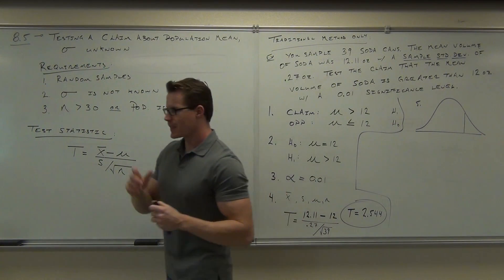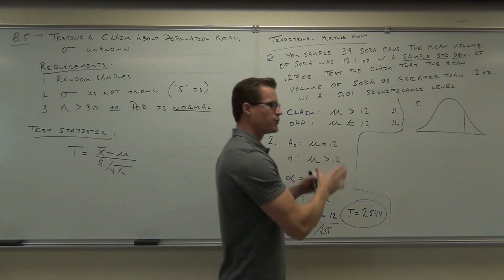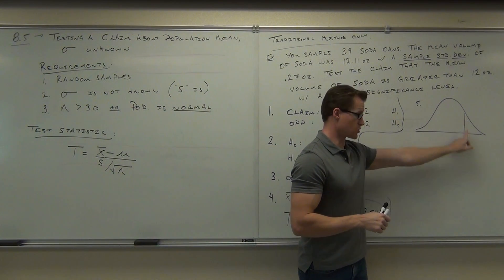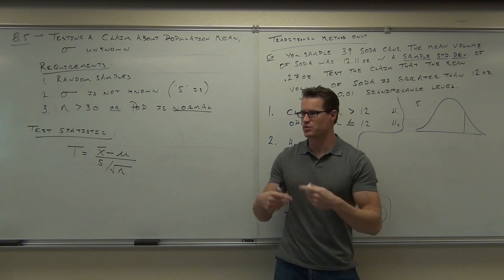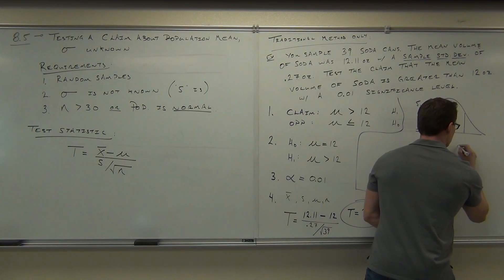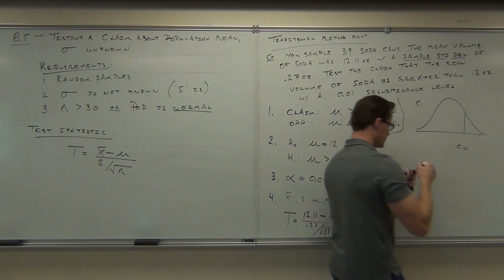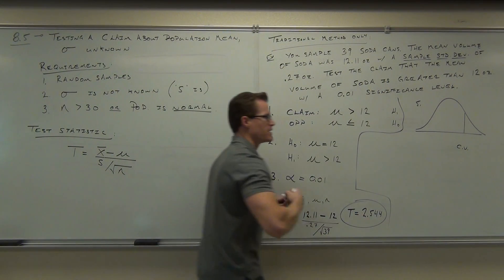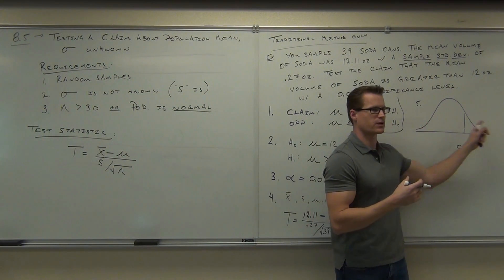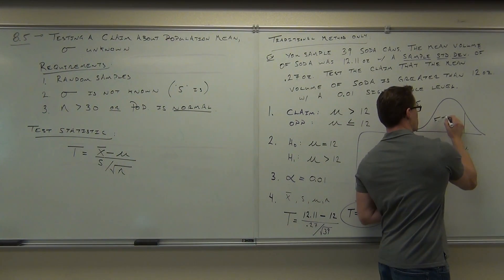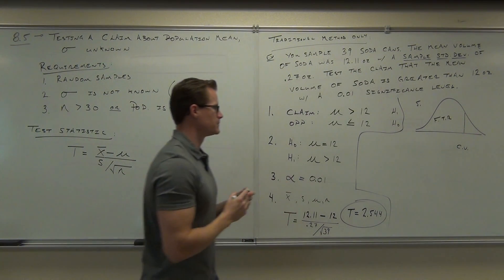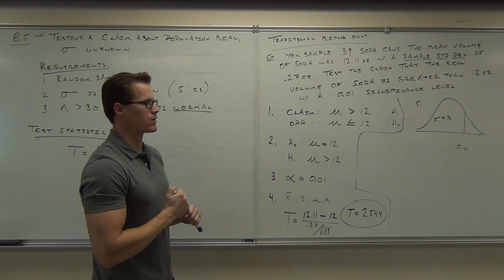Now, the traditional method said you're supposed to do this. You're supposed to look your alpha up in some sort of table and give me a critical value. So we're going to be looking for a critical value here. That's what the traditional method was. Critical value. It will separate this into the fail-to-reject region and the reject region. Which one's the fail-to-reject region, left or right? So this is FTR, fail-to-reject. And that's my rejection region.